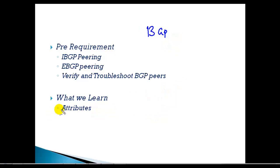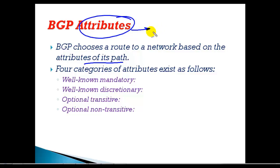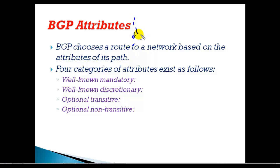BGP chooses the best route based on the attributes of its path, which means BGP attributes decide which is going to be the best route. Unlike IGP, it is not going to use bandwidth, delay, or hop count values. Instead it uses attributes. These attributes are divided into four categories: well-known mandatory, well-known discretionary, optional transitive, and optional non-transitive.